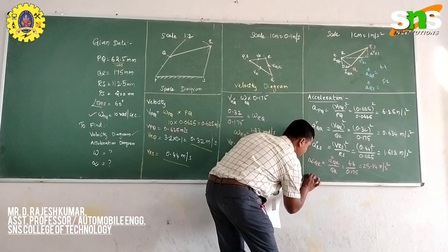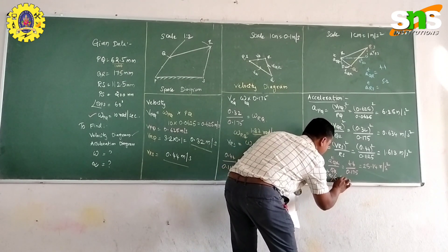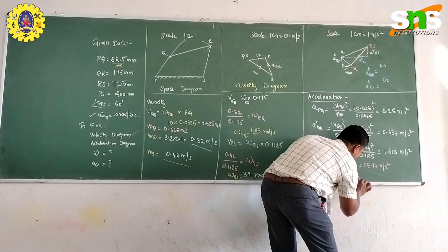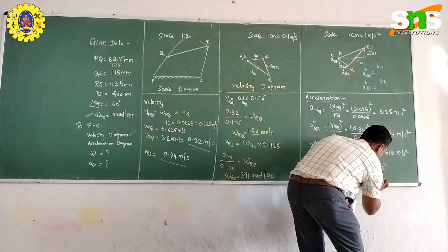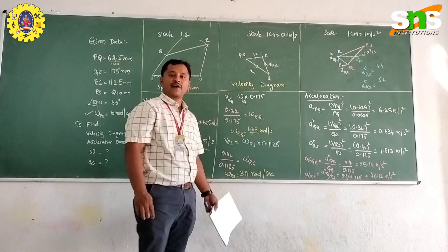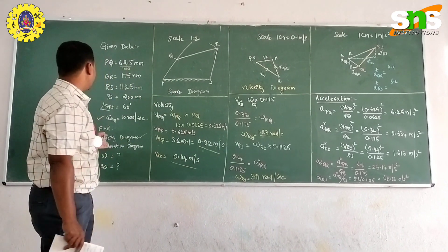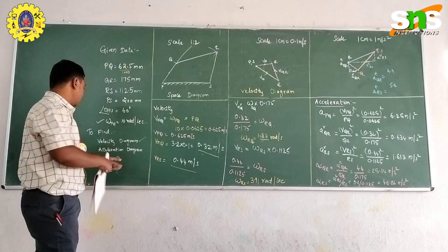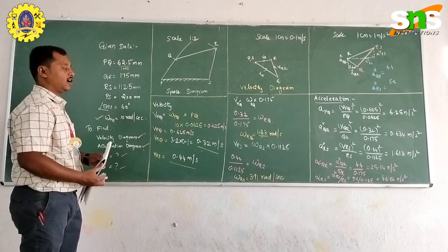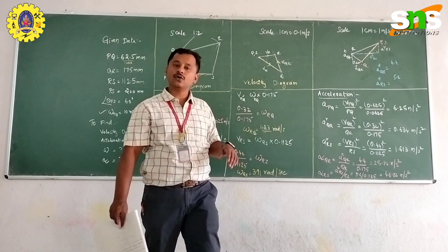Similarly, angular acceleration of link RS = tangential acceleration RS ÷ length of RS = 5.2 ÷ 0.1125 = 46.22 rad/s². So we have found the velocity diagram, acceleration diagram, angular velocity, and angular acceleration for this problem. This completes the solution. We'll meet in the next class — thank you.